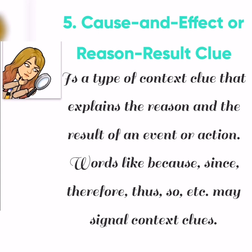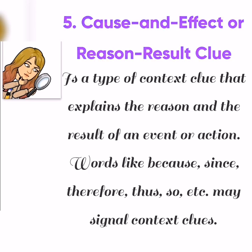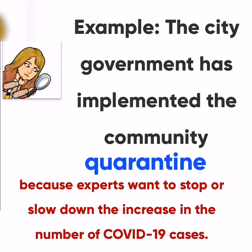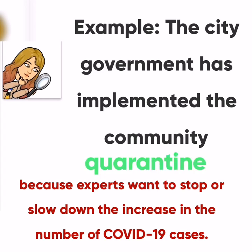The fifth type of context clue is the cause and effect or reason-result clue. It is a type of context clue that explains the reason and the result of an event or action. Words like 'because,' 'since,' 'therefore,' 'thus,' and 'so' may signal context clues. For example, 'The city government has implemented the community quarantine because experts want to stop or slow down the increase in the number of COVID-19 cases.' The word 'quarantine' is the difficult term, and the highlighted words or phrases describe the effect or result.